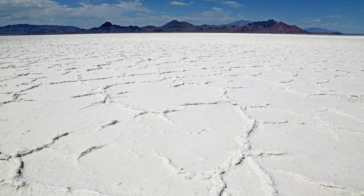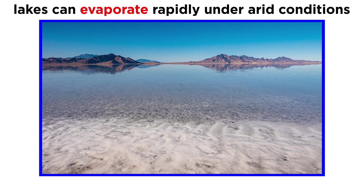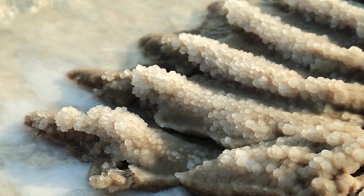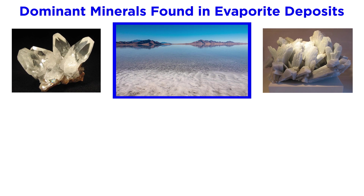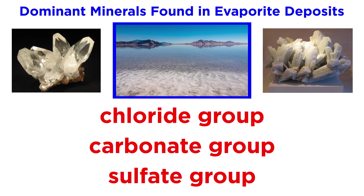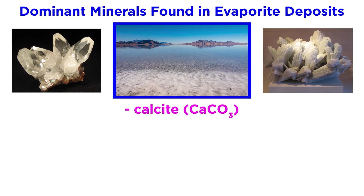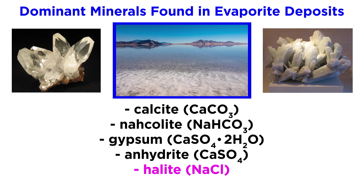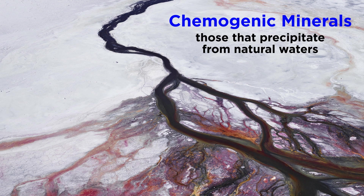The climate of a depositional environment also matters, especially when it is abnormally arid, and this is where composition comes into play. In these areas, lakes will evaporate at a high rate, causing salts to precipitate out of solution and fall to the bottom as sediment. The types of salts that accumulate are heavily dependent upon the water's chemistry. The dominant minerals in these evaporite deposits belong to the chloride, carbonate, and sulfate groups, and common minerals include calcite (calcium carbonate), nahcolite (sodium bicarbonate), gypsum (hydrated calcium sulfate), anhydrite (calcium sulfate), halite (sodium chloride), and sylvite (potassium chloride). Minerals that precipitate from natural waters are said to be chemogenic.